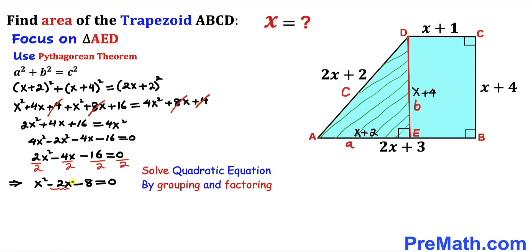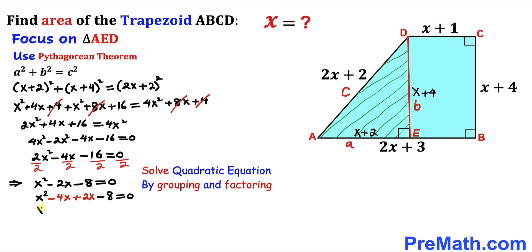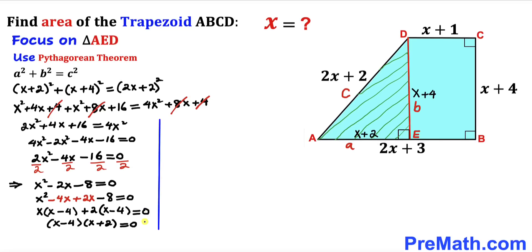Focusing on the middle term negative 2x, we rewrite it as negative 4x plus 2x. So the equation becomes x squared minus 4x plus 2x minus 8 equals 0. Between the first two terms, x is common; between the last two terms, 2 is common. Factoring out x gives x(x minus 4), and factoring out 2 gives 2(x minus 4). Since (x minus 4) is common, the factored form is (x minus 4)(x plus 2) equals 0. Setting each factor to zero: x minus 4 equals 0 and x plus 2 equals 0.